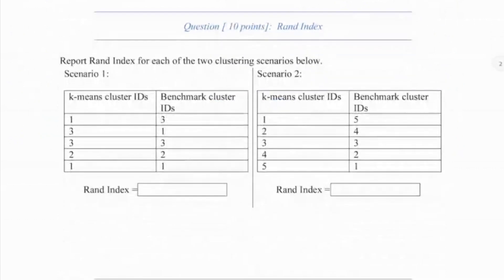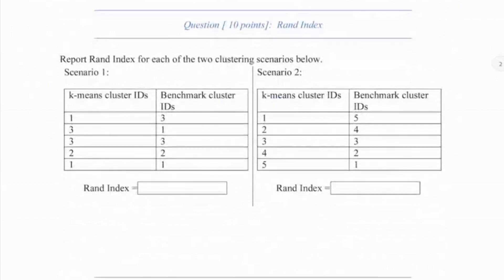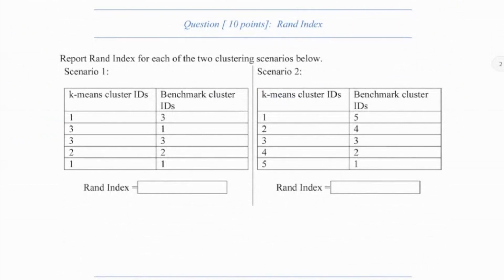Today, I am showing two examples of how to compute RAND index given the outcome of a clustering result, say K-means, and ground truth or benchmark labels. I have made videos on RAND index theory before; I suggest that you watch those videos after watching this one. I am making this video to help my students with their upcoming midterm exam. Here, there are two problems on RAND index.